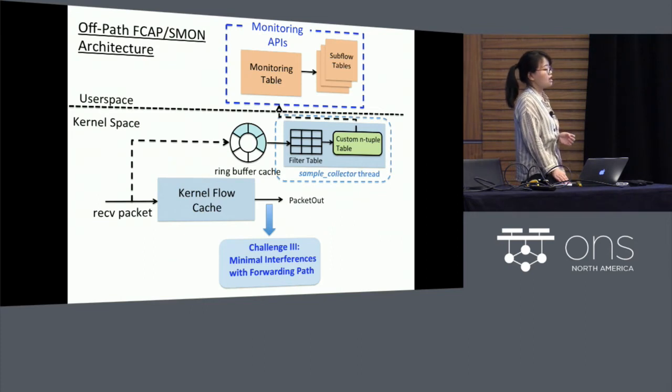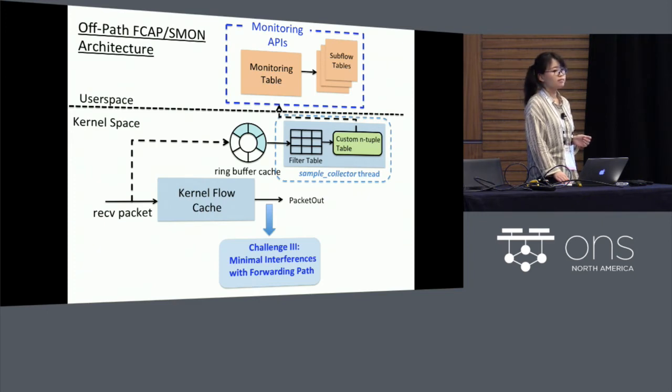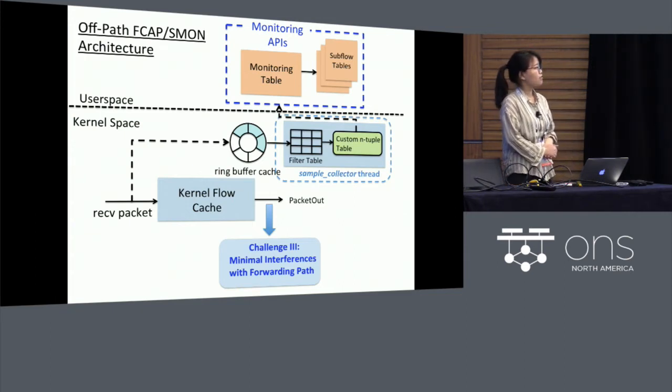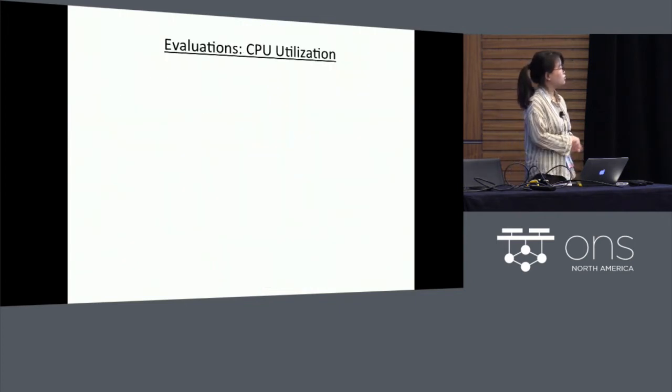And this ring buffer we introduced maintains two pointers. One is for the forwarding process to make copies of the incoming packet headers and the other pointer is for the kernel thread we created to retrieve the packet headers and collect the flow stats in this custom end table table. So far, we have discussed some high-level ideas of our proposed frameworks. Next, I'd like to present some of our evaluation results. In our experiment, we evaluated the performance of the different monitoring designs from various perspectives.